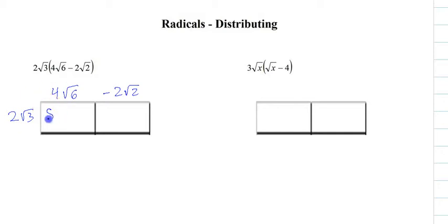Two times four, that's eight square root of 18. And that's minus six minus four square root of six. So outside with outside, inside with inside, outside with outside, inside with inside. And then now we just have to simplify.